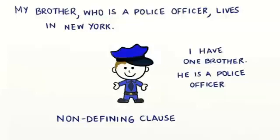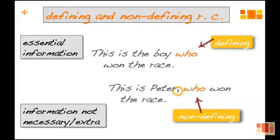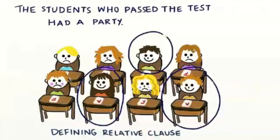'This is the boy who won the race' — a defining relative clause. Compare: 'This is Peter, who won the race' — a non-defining relative clause. If you need to understand essential information, use a defining relative clause. Peter already knows, so the extra information goes in a non-defining relative clause.